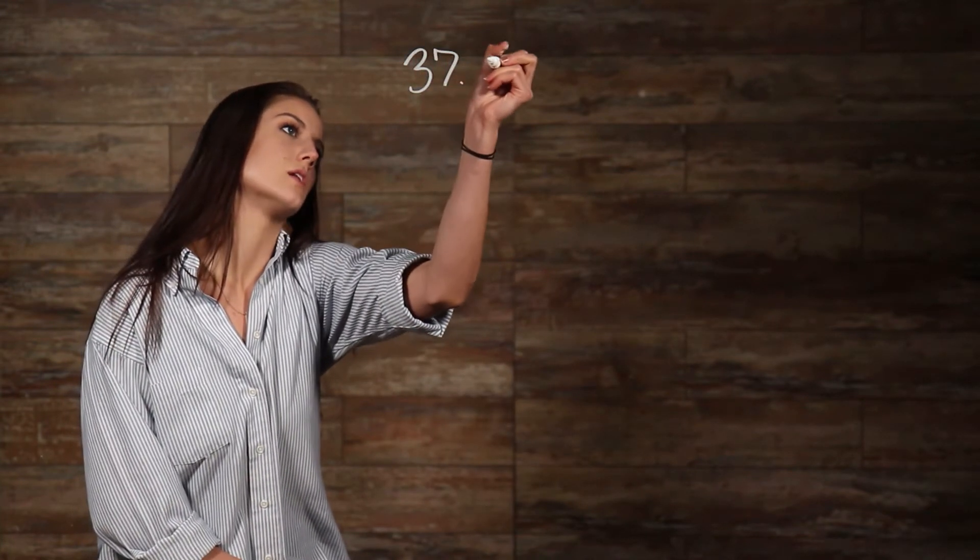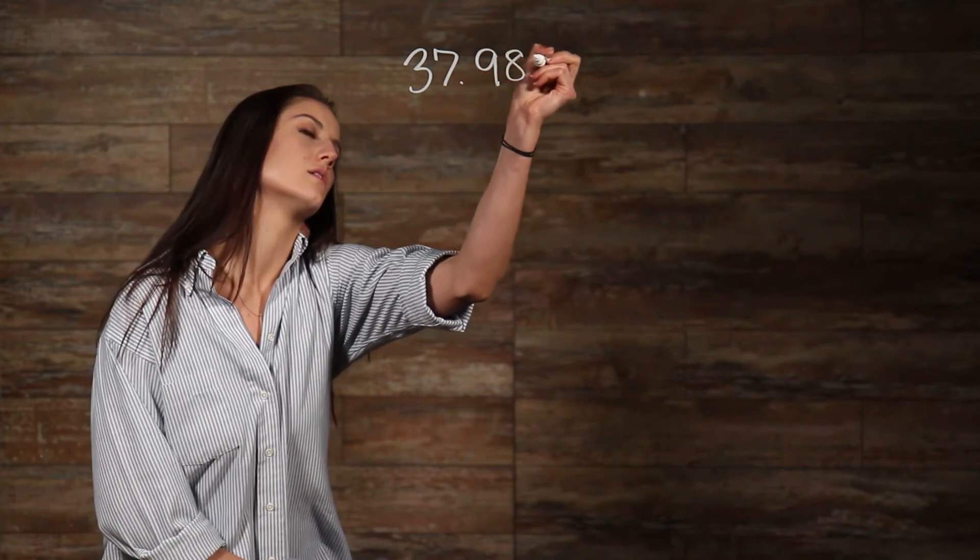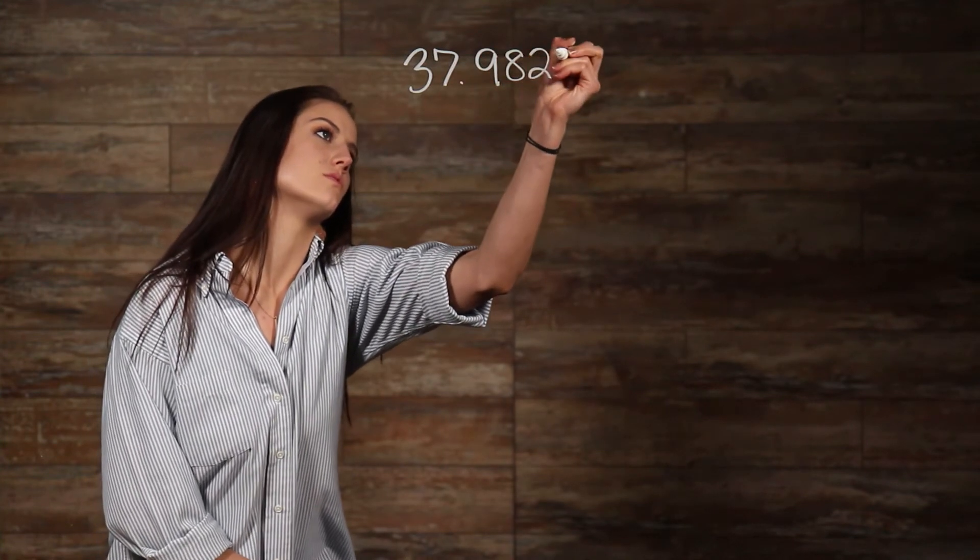Let's take a look at another example. Round 37.9824 to the nearest thousandth. Remember, thousandth is not the same as thousand. Thousandth lets us know that we are dealing with a decimal number, and thousand lets us know that we are dealing with a whole number.